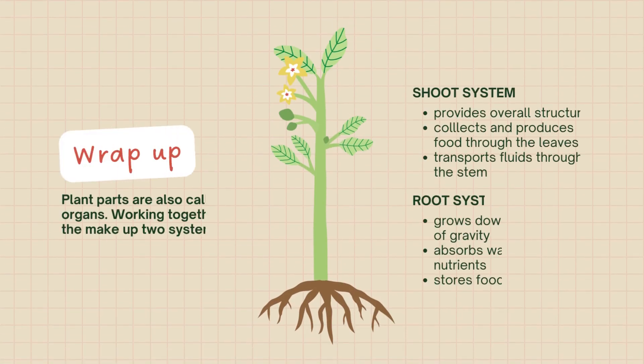Let's wrap up. Plant parts are also called organs working together that make up two systems. The shoot system provides overall structure and collects and produces food through the leaves, and transports fluids through the stem. The root system grows downward because of gravity, absorbs water and nutrients, and stores food.